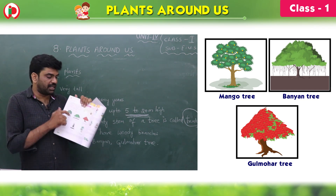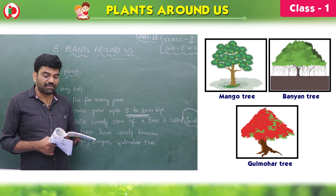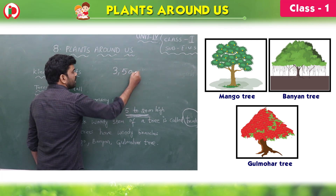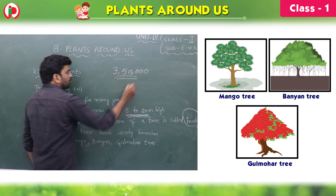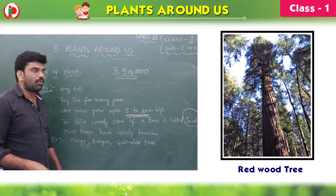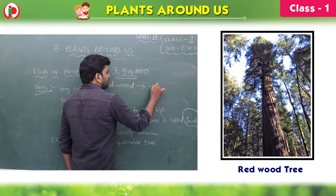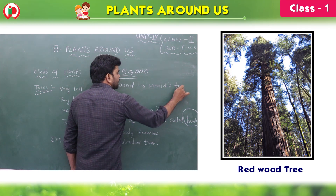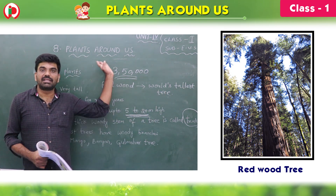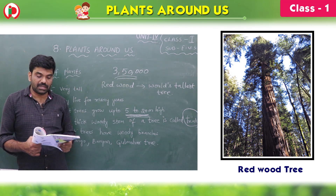This is the gulmohar tree. Fact finder: about 3 lakh 50,000 kinds of plants are known. The redwood is the world's tallest tree. What is the tallest tree? Redwood. So far we know 3 lakh 50,000 kinds of plants, and the tallest tree is redwood.